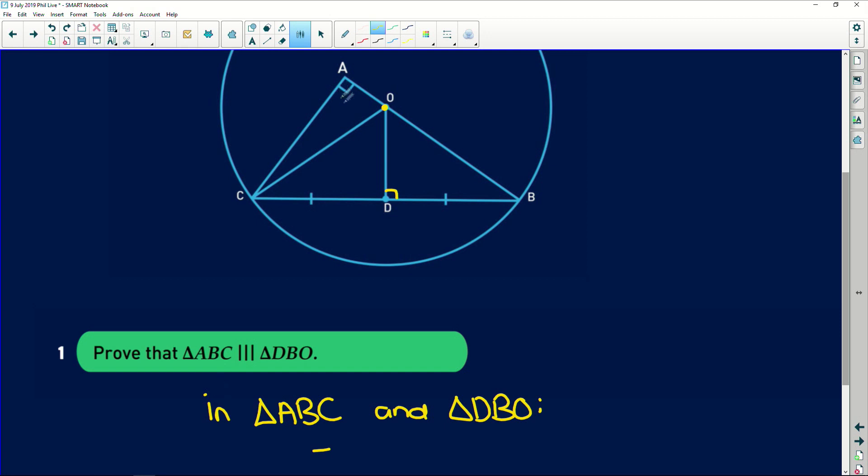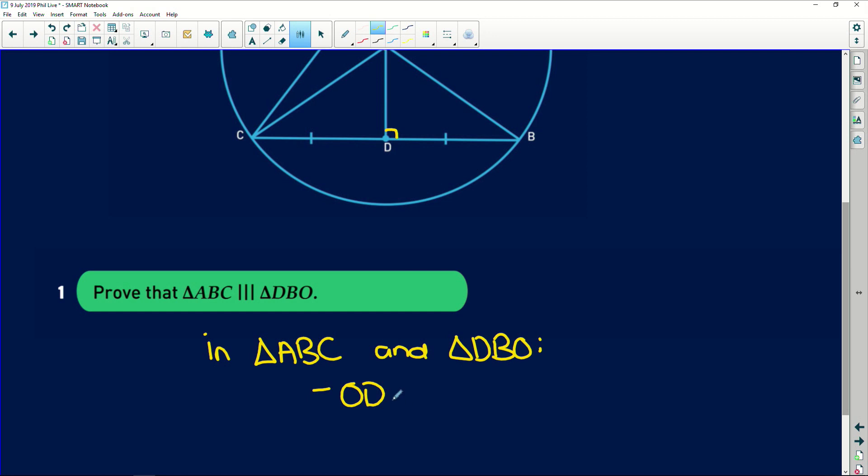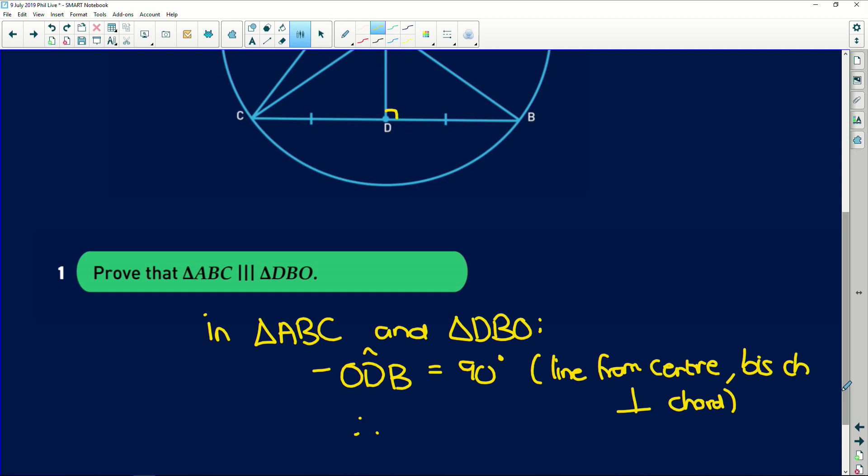Well, we already know that angle A is equal to angle D, but we need to prove why angle D is 90 degrees. So angle ODB is 90 degrees. Why? Because line from center bisecting a chord is perpendicular. So we have established that 90 degrees. Therefore, angle A is equal to angle ODB. That's our first angle relationship in our similarity proof.